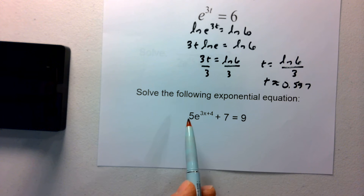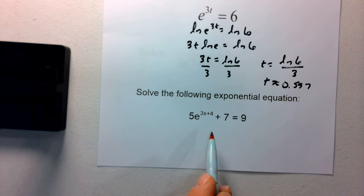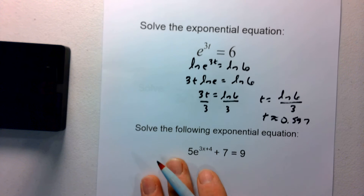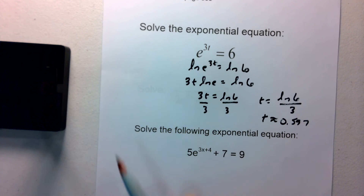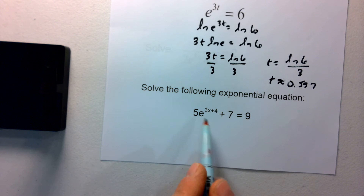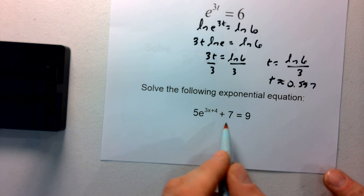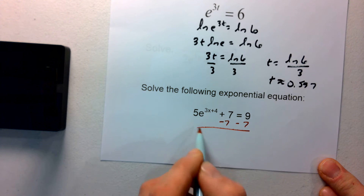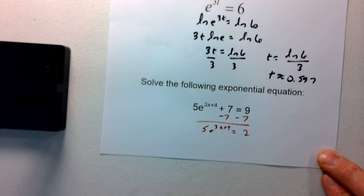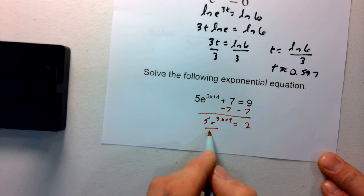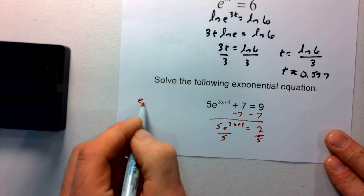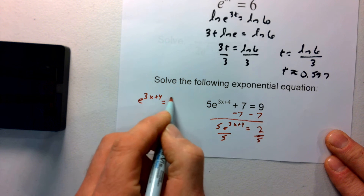For a more complex exponential equation, the first thing we do is get that e by itself. In the first example, e was already isolated. Here we've got a 5 multiplied to it and a 7 being added on the left side. So we subtract 7 from both sides to get 5e to the 3x+4 equals 2, then divide by 5 on both sides. So e to the 3x+4 equals 2 fifths.